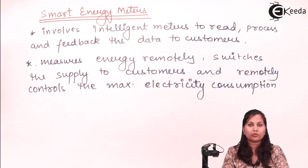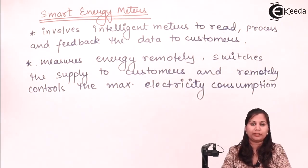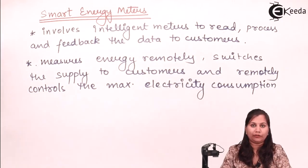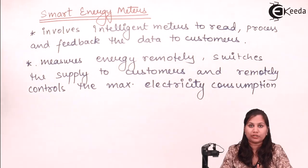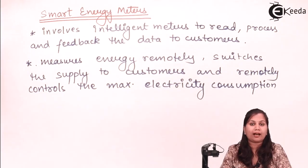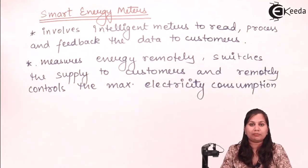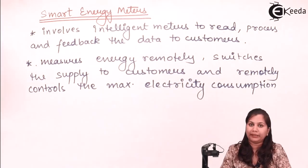In summary, we studied about energy meters used for the measurement of energy. Energy is measured by measuring the power over a period of time. We studied the various classification factors and then three types of energy meters: the electromechanical induction type, the electronic energy meters, and the smart energy meters. All of these measure energy by measuring power and integrating it over a period of time.